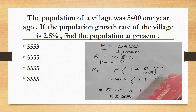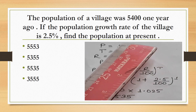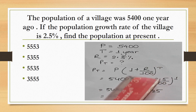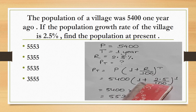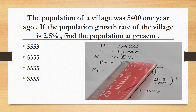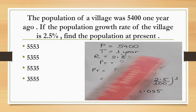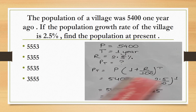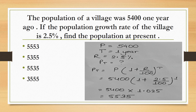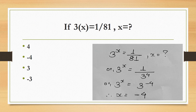The formula for population growth is: PT = P(1 + R/100)^t. Here P = 5,400, R = 2.5%, t = 1. So PT = 5400 × (1 + 2.5/100)^1. Solving this gives PT = 5,535. The current population is 5,535.